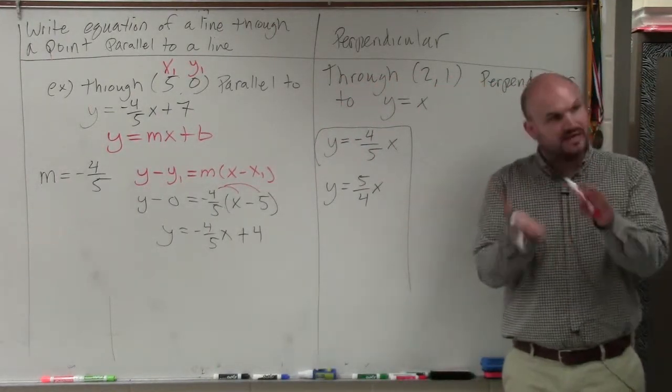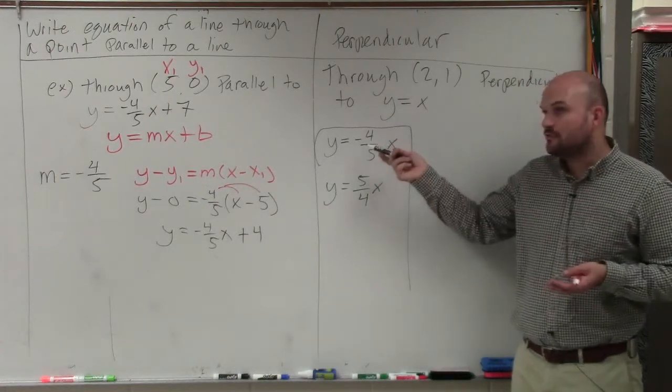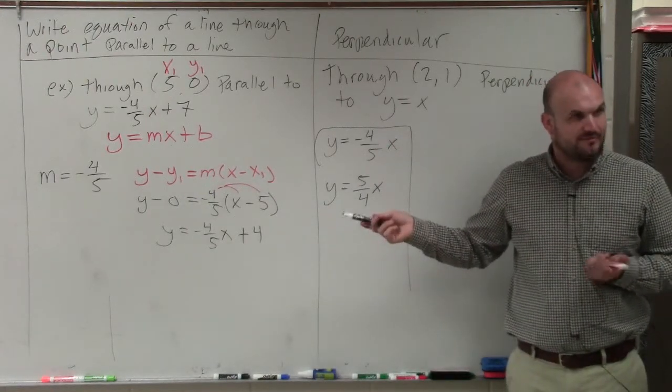So basically, you flip, you take the reciprocal, and if one slope is negative, the other slope is going to be positive, all right?